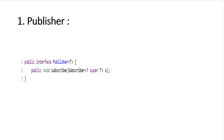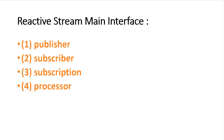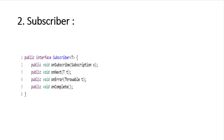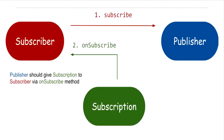The second interface is Subscriber. The Subscriber interface contains four methods: first is onSubscribe, second is onNext, third is onError, and fourth is onComplete. The subscriber will subscribe to and consume events from the publisher.